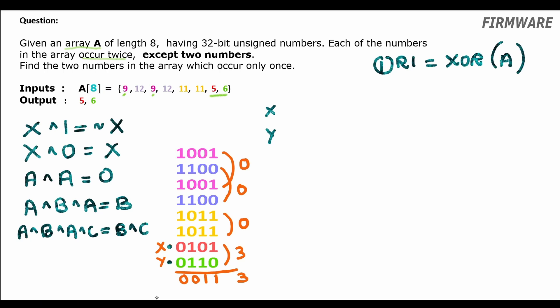So we have the result X XOR Y 0 1 0 1 XOR with 0 1 1 0 equal to 0 0 1 1. Now we know the result of the XOR of all the numbers in the array but we do not know the numbers X and Y yet which occur only once in the array.